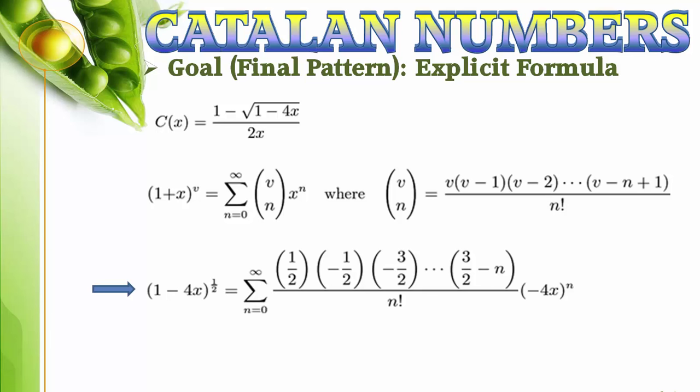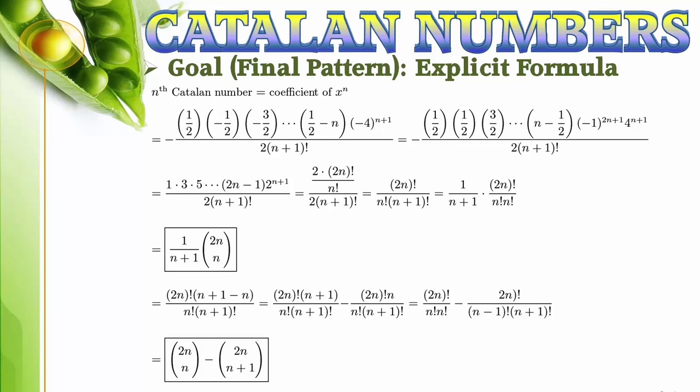Notice that the one minus in front only cancels the constant term and makes all other terms have positive coefficients. The divided by 2x means that the coefficient of x to the n in the generating function is the coefficient of x to the n plus 1 in the binomial expansion divided by 2. After several standard algebraic manipulations involving factorials, we end up with a nice closed form. There are many possible different but mathematically equivalent expressions possible. Two of the most commonly used forms are 1 over the quantity n plus 1 times 2n choose n and 2n choose n minus 2n choose n plus 1.